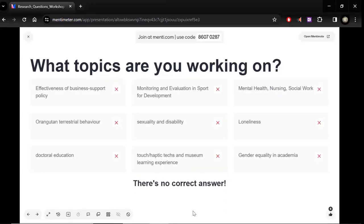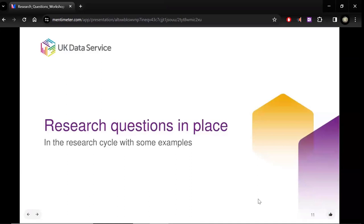Loneliness, gender equality, haptic tech, doctoral education, orangutan behavior. That's amazing. Business support policy, education, mental health nursing, sexuality and disability. Great. Some great broad themes. A couple that overlap in a few ways, but it's also a very diverse sort of set. So hopefully we can come together well enough in the breakout room section that we can give new perspective on each other's questions. And that's a really beneficial outlet. So moving on to the next section, I will pass it back to Nigel because he's going to go through his research cycle.